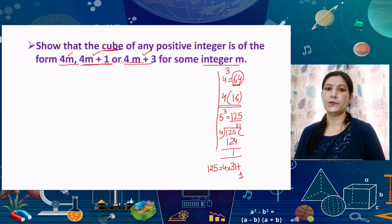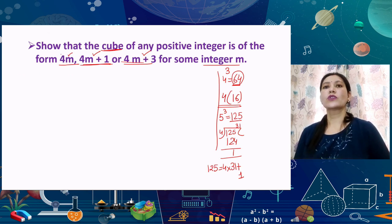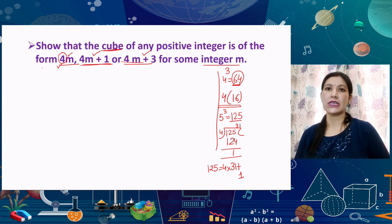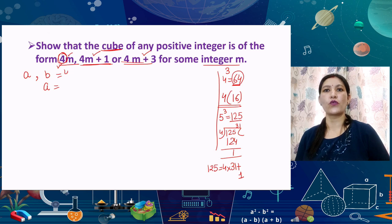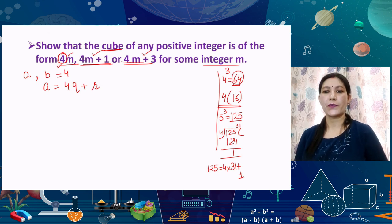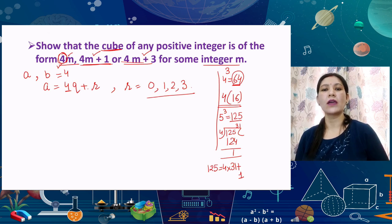To solve this generally using Euclid's division lemma: for two positive integers A and B, there exist unique integers Q and R such that A = BQ + R. In this question we take B = 4, so A = 4Q + R, where R can be 0, 1, 2, or 3 (remainder is always less than the divisor). We take all four cases one by one. Case 1: remainder is 0. Then A = 4Q, and cubing both sides, A³ = (4Q)³ = 64Q³ = 4 × 16Q³, which is in the form 4m where m = 16Q³.